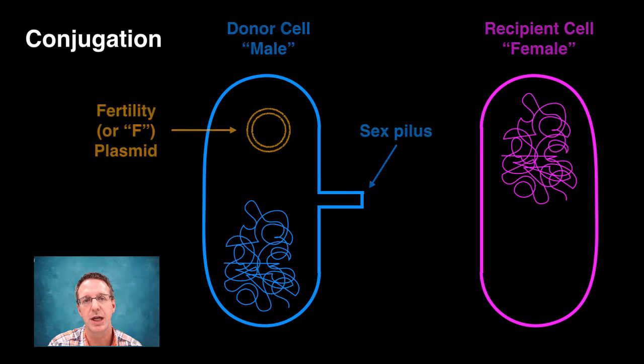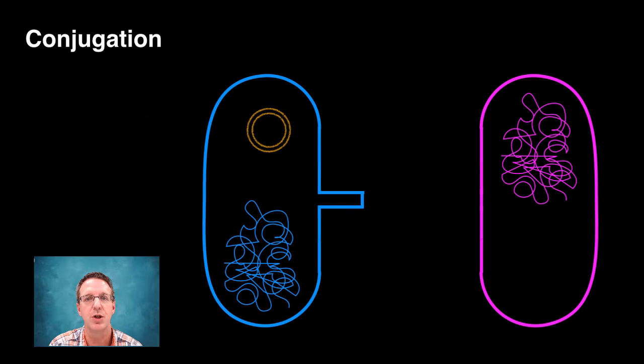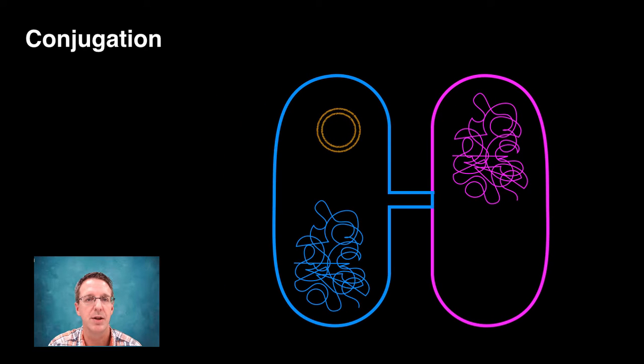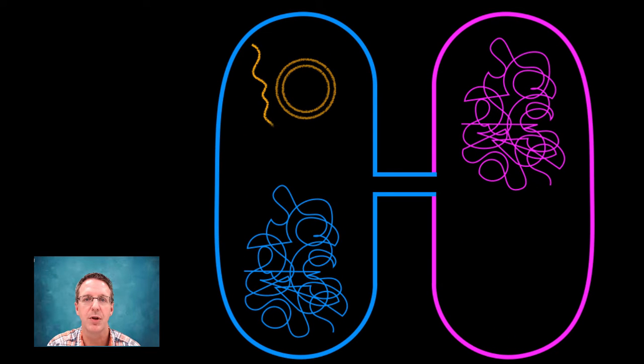Now, mating is initiated by the connection between the two cells via the pilus. The donor cell then replicates one of the strands of the F-factor and sends it through the pilus and into the recipient cell, where it recircularizes. And once it does, the complementary strand is synthesized, forming a complete new F-plasmid in the recipient.